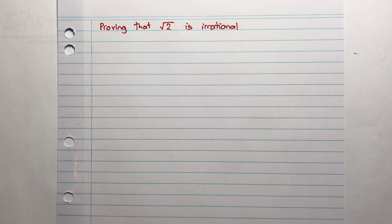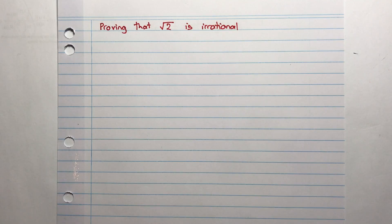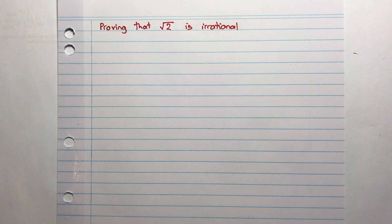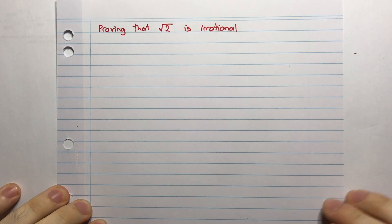A lot of the things that you do see, especially towards the end of an extension 2 exam, are usually from harder extension 1. And when we say harder extension 1, what they really mean is something taken from first-year calculus courses. Anyway, proving that root 2 is irrational.